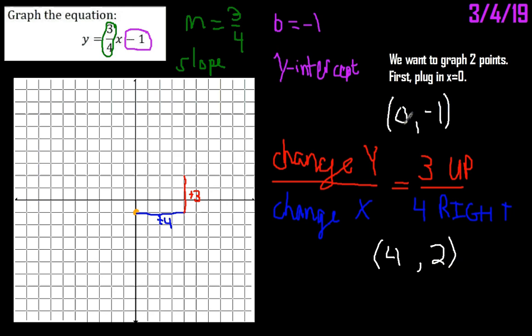And notice how I'm able to calculate that from this ordered pair. So I said 0 plus 4 is 4, and then negative 1 plus 3 is 2. So I now have this ordered pair.